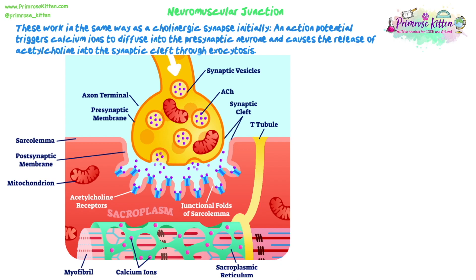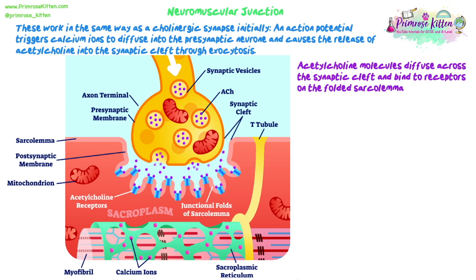We're mostly looking at the differences in the post-synaptic membrane. In the same way as before, the acetylcholine diffuses across the synaptic cleft and binds to receptors. But this time you'll notice there are folds in the sarcolemma — it's not just a smooth straight surface. There are lots of folds and all of the receptors are within the membrane on those folds.